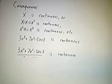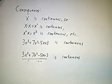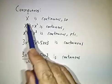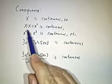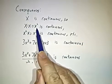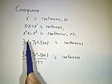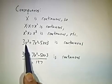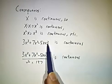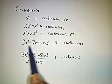So using these rules, we can make a lot of continuous functions. Like we already know x is continuous, so x times x is continuous, that's x², that times x is continuous, that's x³, and now we add things together. 3x³ and 7x² and -5x and 3 are all continuous, so their sum is continuous.